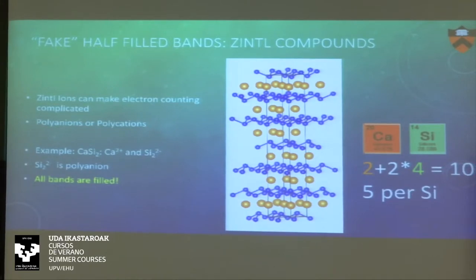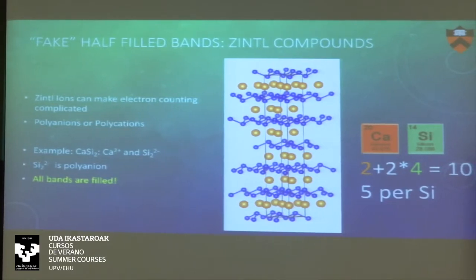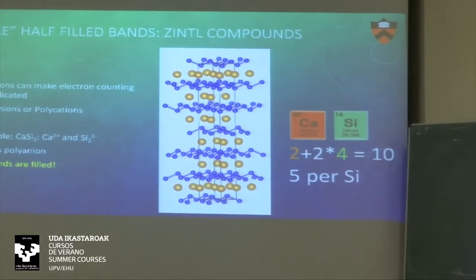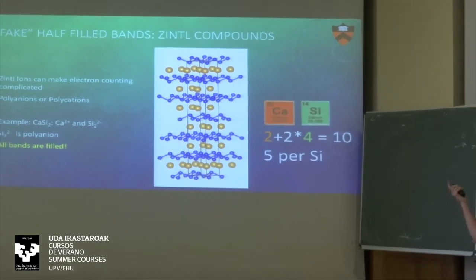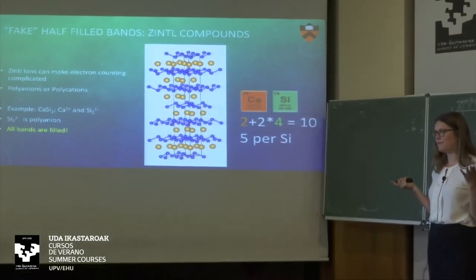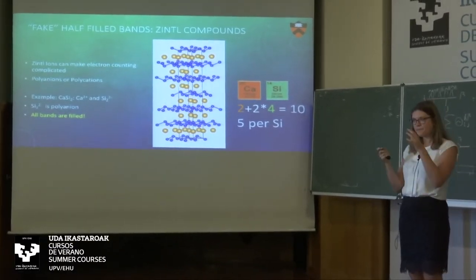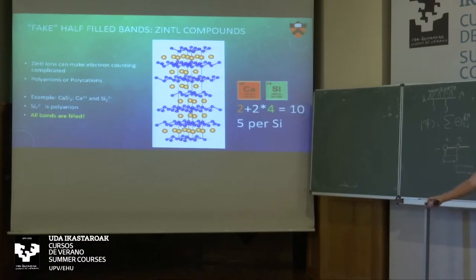Even if you think you can have a half-filled band, you don't necessarily have one. Also from my first lecture, simple compounds that form bonds to become charge-balanced can appear as half-filled bands in a filling constraint database search — but it's also a fake half-filled band. Like calcium silicide: it has five electrons per silicon, which would be two in S orbitals and three P electrons all half-filled, but since they form bonds sharing electrons, we actually get a semiconductor and not a half-filled material.